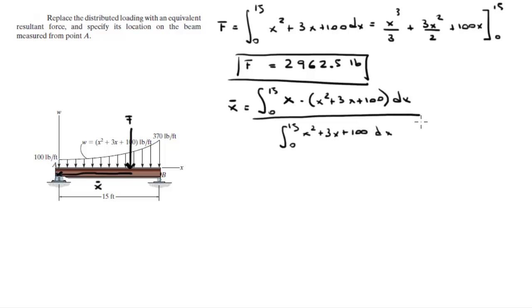The bottom of this fraction we already found. Now I'm going to distribute this x into this parenthesis and we get the integral from 0 to 15 of x cubed plus 3x squared plus 100x dx.